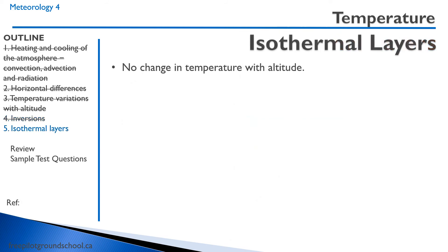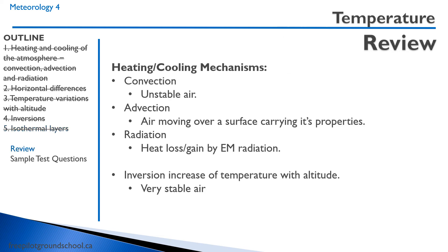An isothermal layer is when there is no change of temperature with altitude. Talk about some heating and cooling mechanisms: convection means we end up with unstable air. Advection is air moving over a surface, carrying its properties. And radiation is a heat loss or gain by electromagnetic radiation. An inversion is an increase of temperature with altitude, characteristic of very stable air.